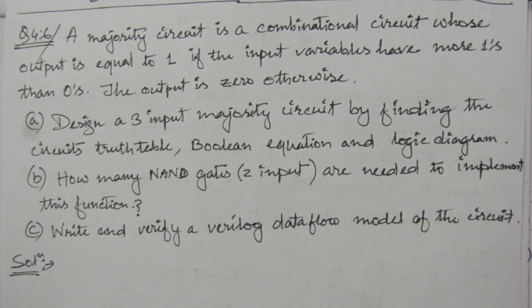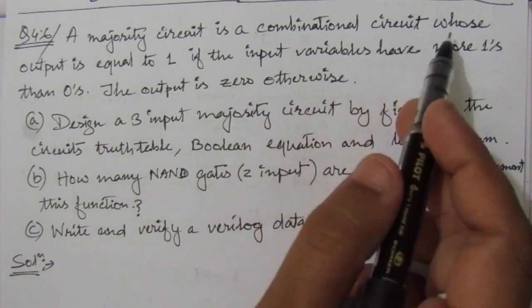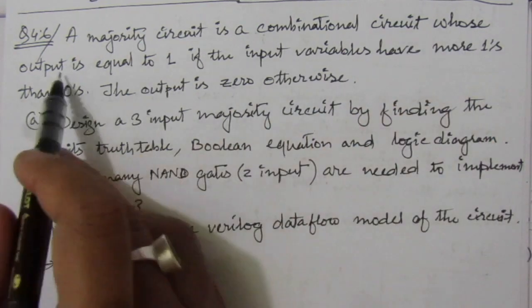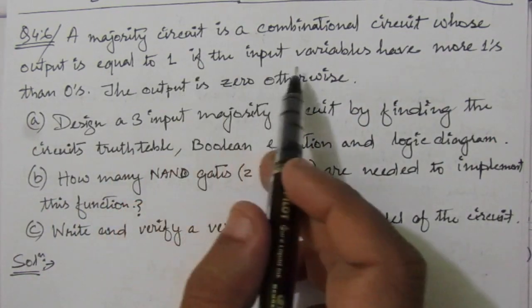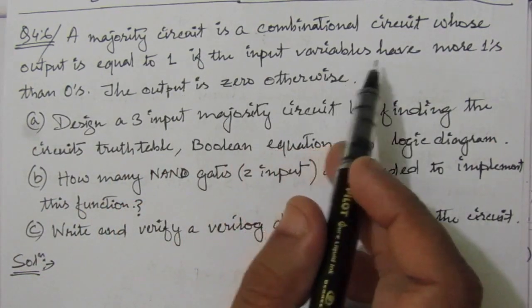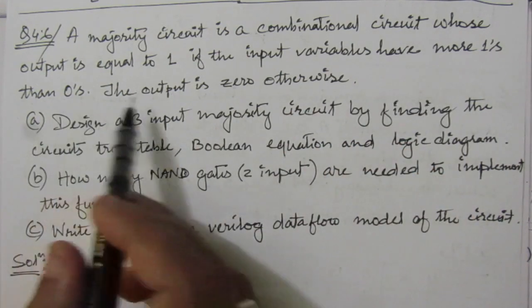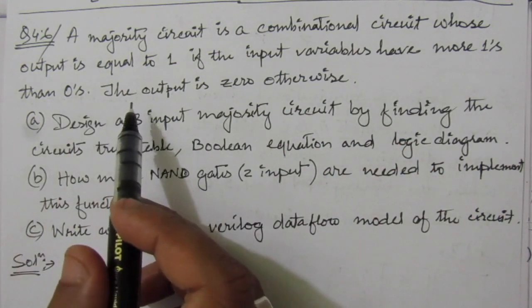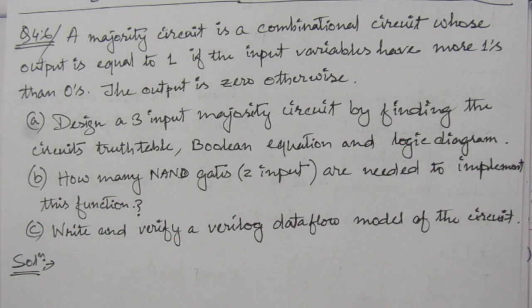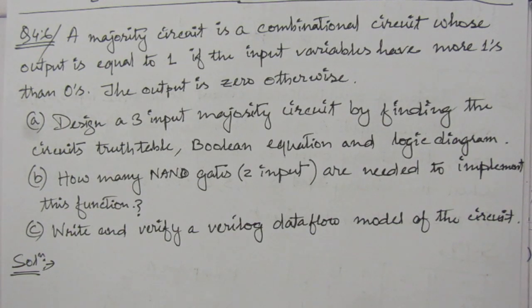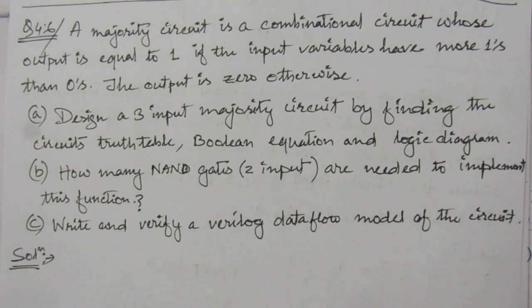The problem is: a majority circuit is a combinational circuit whose output is equal to 1 if the input variables have more 1s than 0s; the output is 0 otherwise. For example, if we have 3 inputs and there are 2 ones and 1 zero, the number of 1s is greater than the number of 0s, so the output function will give value 1.